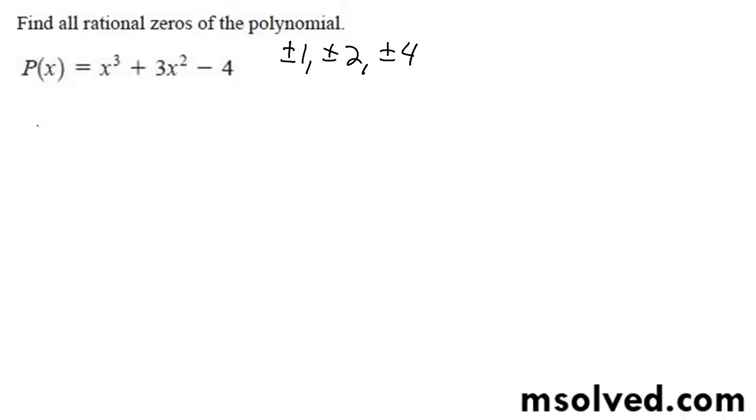So I'll start off with the simple ones. I'm going to start off with negative 1. It's negative 1, and my coefficients 1, and then 3, and then there's no x term, and then negative 4. So negative 1, negative 1, 2, negative 2, negative 2, this becomes 2, and we've got a remainder of negative 2, so that's not correct.